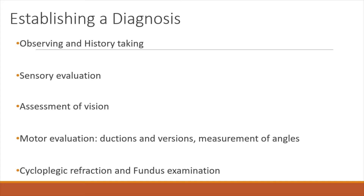When a patient comes in, you start observing as soon as they walk into your room, because these kids have characteristic head postures. A sensory evaluation is a must for these patients, because they may be controlling the squint well in intermittent XTs or ETs while you are examining them. Sensory evaluation gives a clue as to how their control has been outside the clinic. Patients with pattern strabismus may have good stereopsis for near, despite the parents complaining that squint is a lot at home. They have good stereoacuity in their abnormal head position, but in the primary position they don't have good distance stereoacuity.